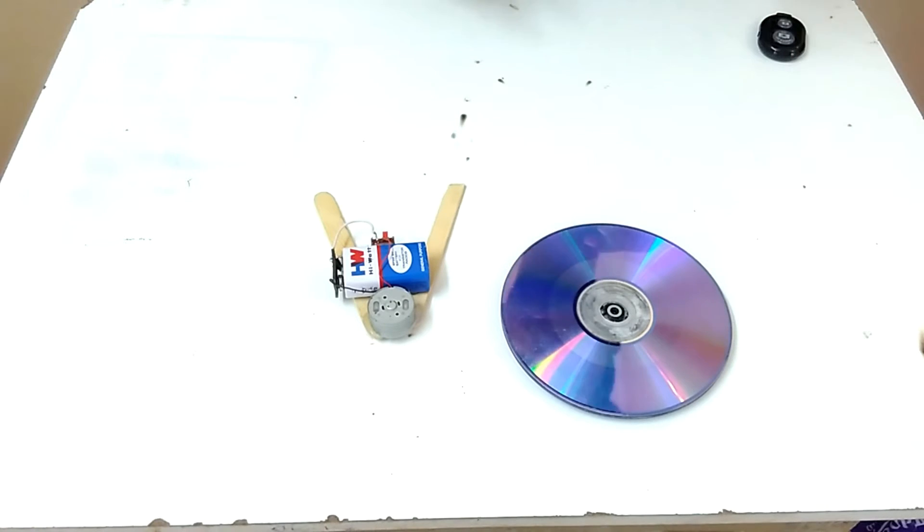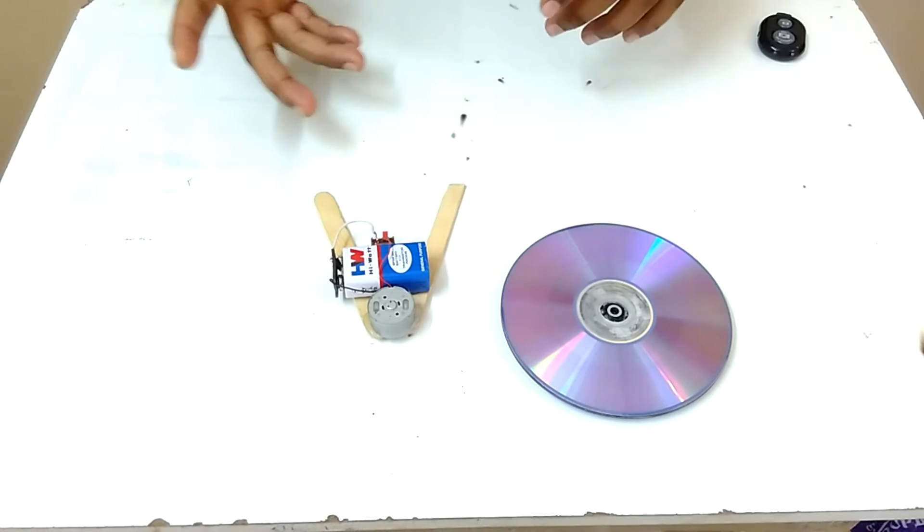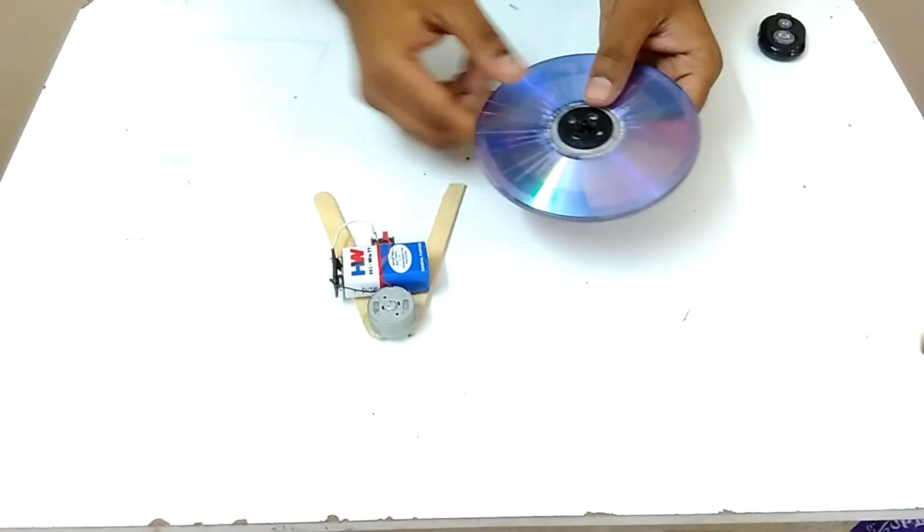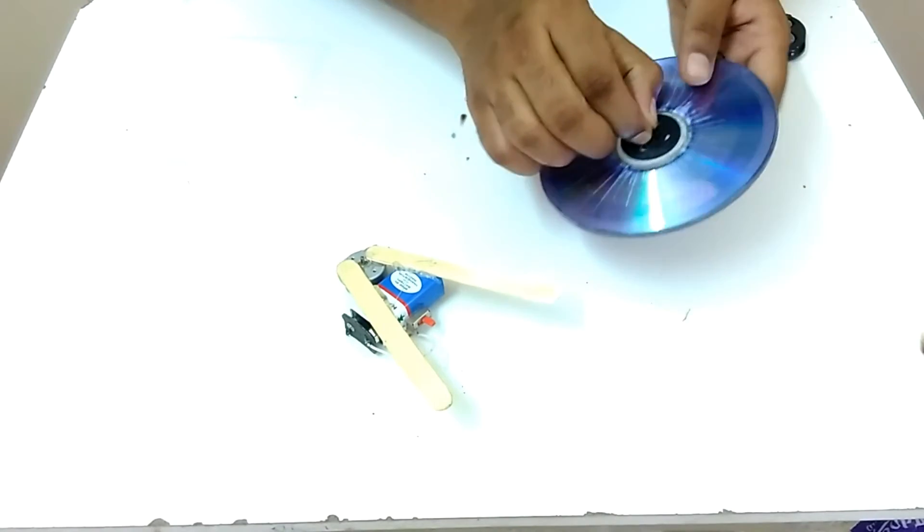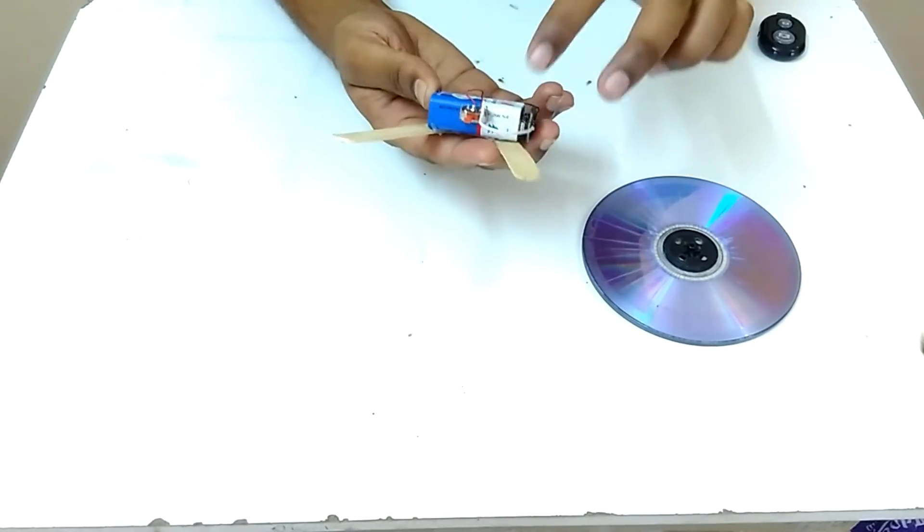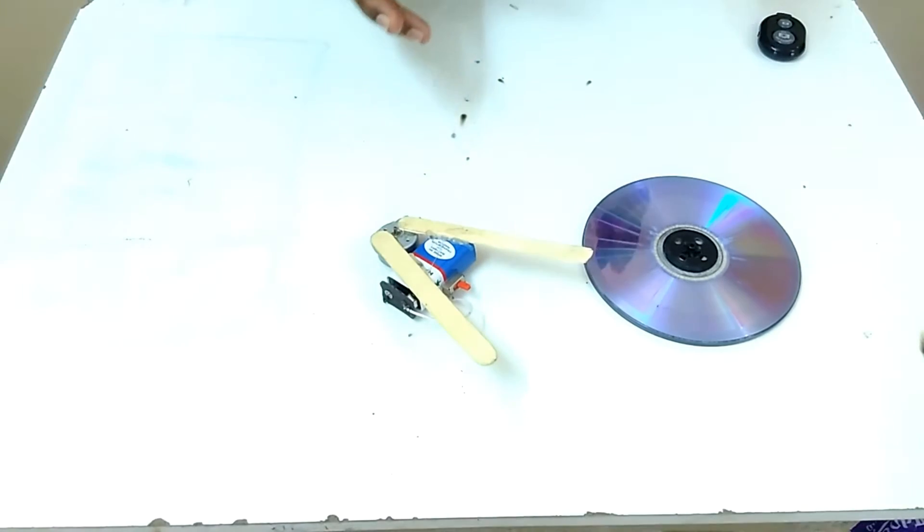The components of the gyroscope include a DVD, a clip attached to the motor, and a power supply. You can use a battery for the motor.